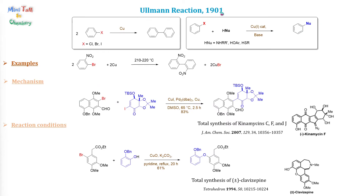In 1901, Ullmann discovered the condensation of 2-orthopromonitrobenzene in the presence of copper at 210 to 220 degrees Celsius to give the corresponding biaryl products. Since then, many different symmetrical or asymmetrical biaryl products have been synthesized using this route.